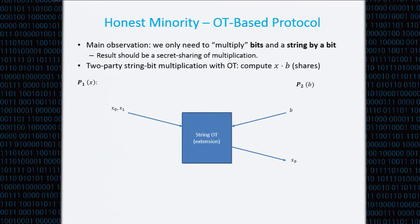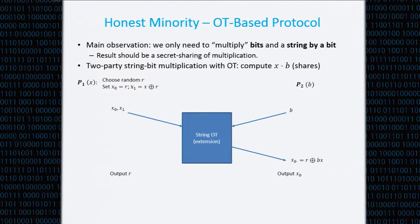To transform this into a multiplication: party P1 chooses a random string R, sets X0 to be R and X1 to be X XOR R. Party P1 outputs R and party P2 outputs XB. Notice that XB equals R XOR (B times X), and this is uniformly random. Therefore, this is indeed a 2-out-of-2 secret sharing of B times X.